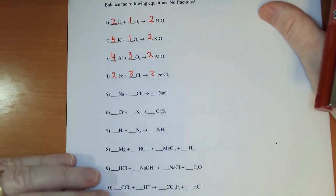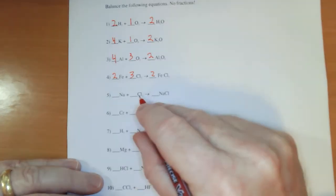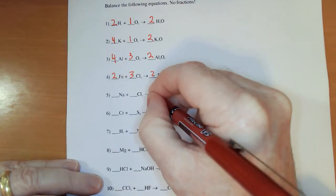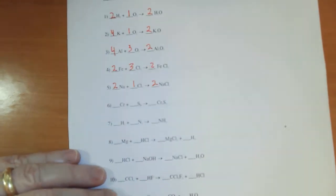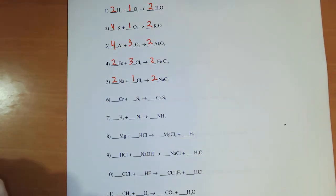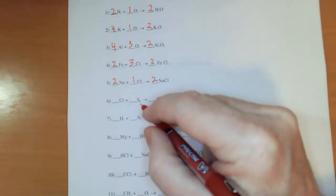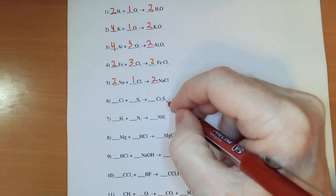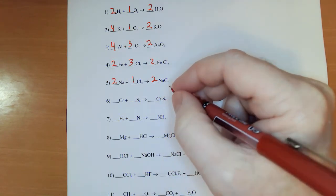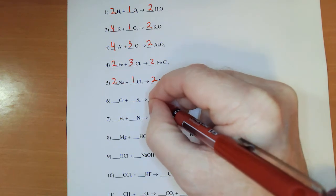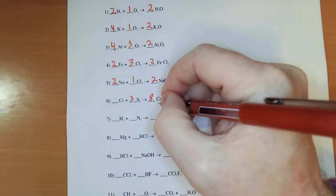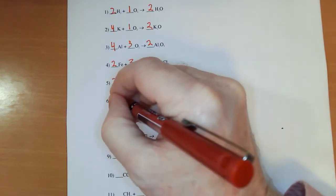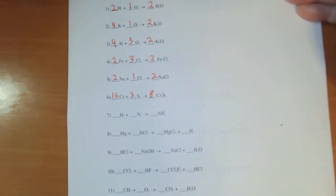Now in number five, two chlorines on this side and one on that just caught my attention. So I put the two there. That means I need two sodiums and a one for the Cl2 or leave it blank if you prefer. Now sometimes the numbers will get bigger. That's an eight. And over here sulfur is a three. So if I multiply this by eight and that by three, they balance out. And two times eight gives me sixteen for the chromium.